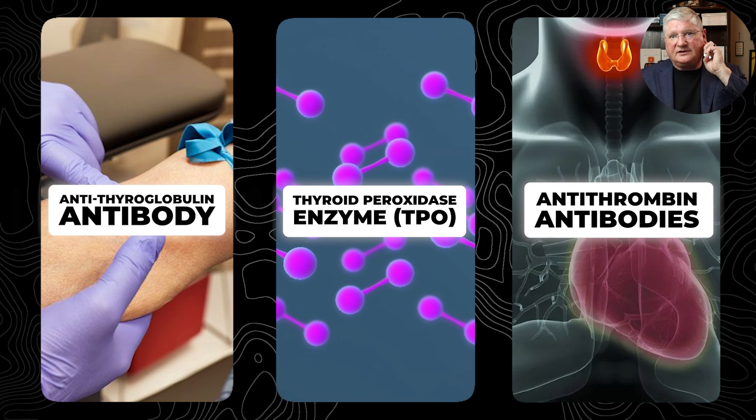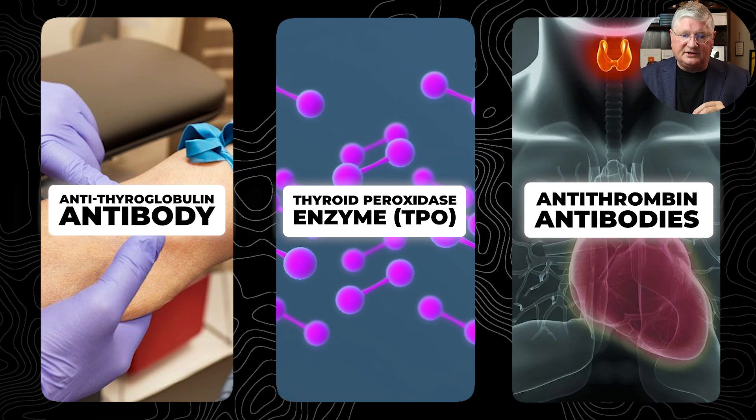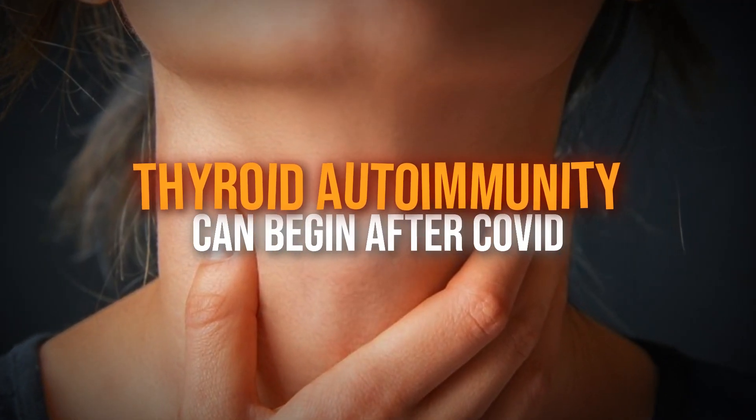The other two antibodies — anti-thyroglobulin and TPO — tend to cause a hypothyroid condition. So you can have autoimmune triggering which affects your thyroid directly, and that can be totally new since COVID.